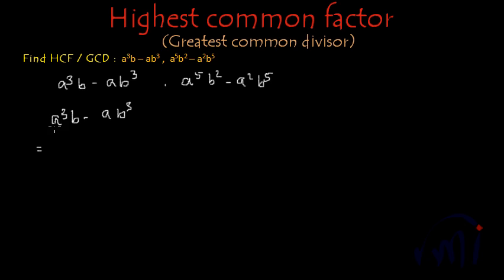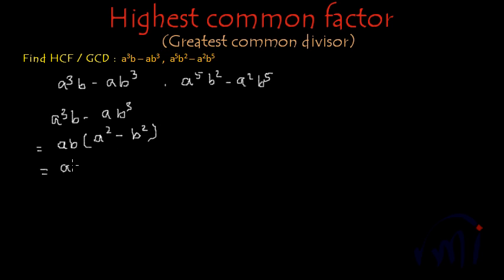In this expression we have at least one a and one b common, so we are going to take ab common. Inside the bracket, from the first term we will have only a square, and this minus sign will be as it is, and from the second term we will have b square. And what is a square minus b square?